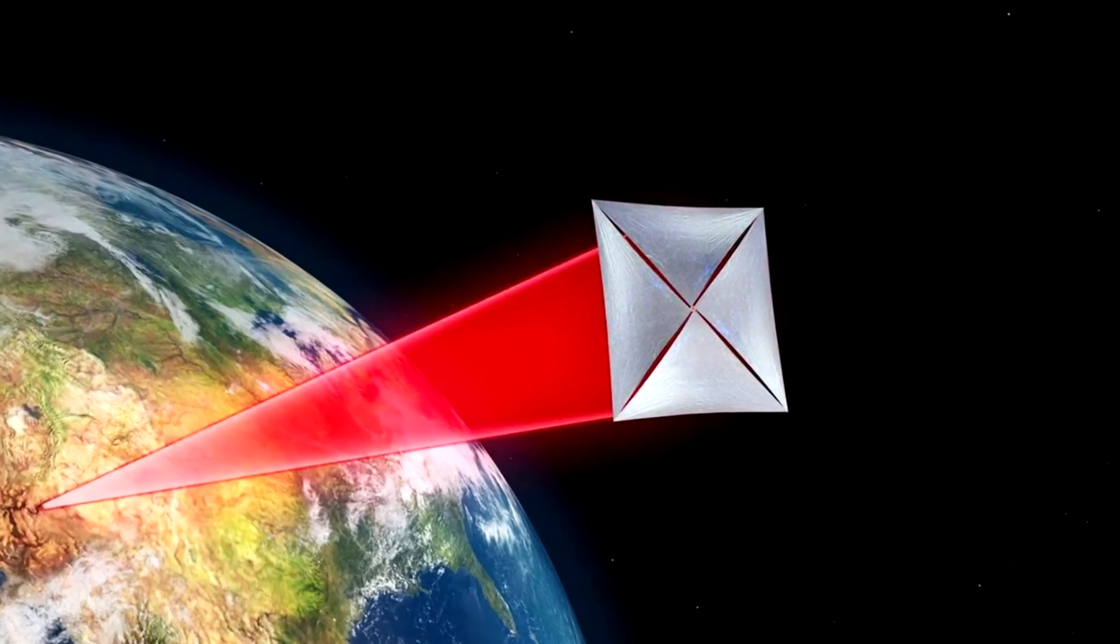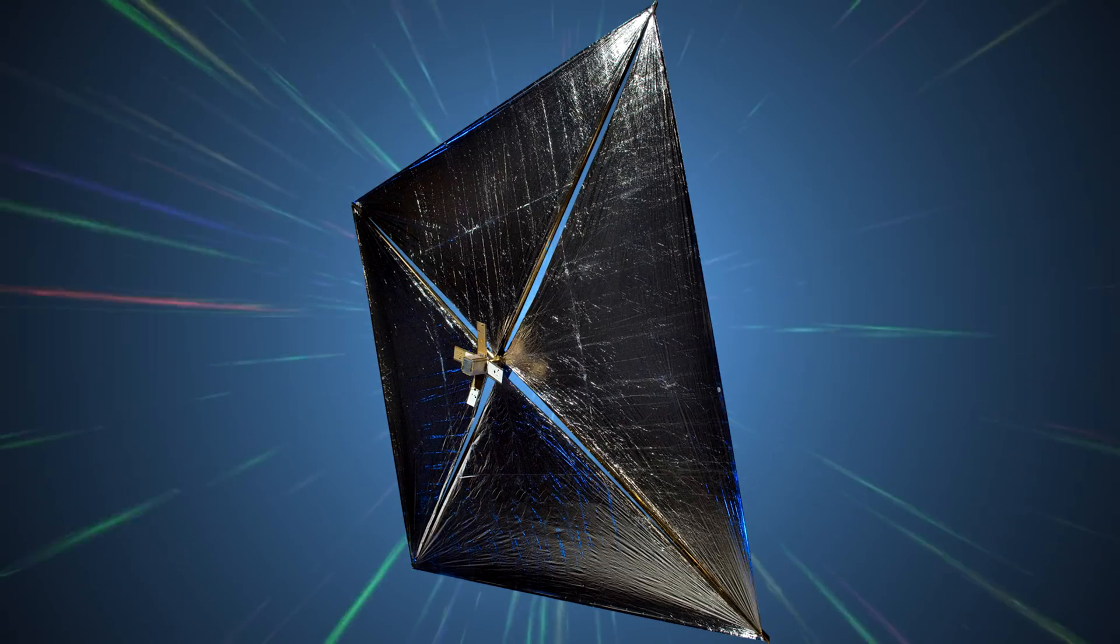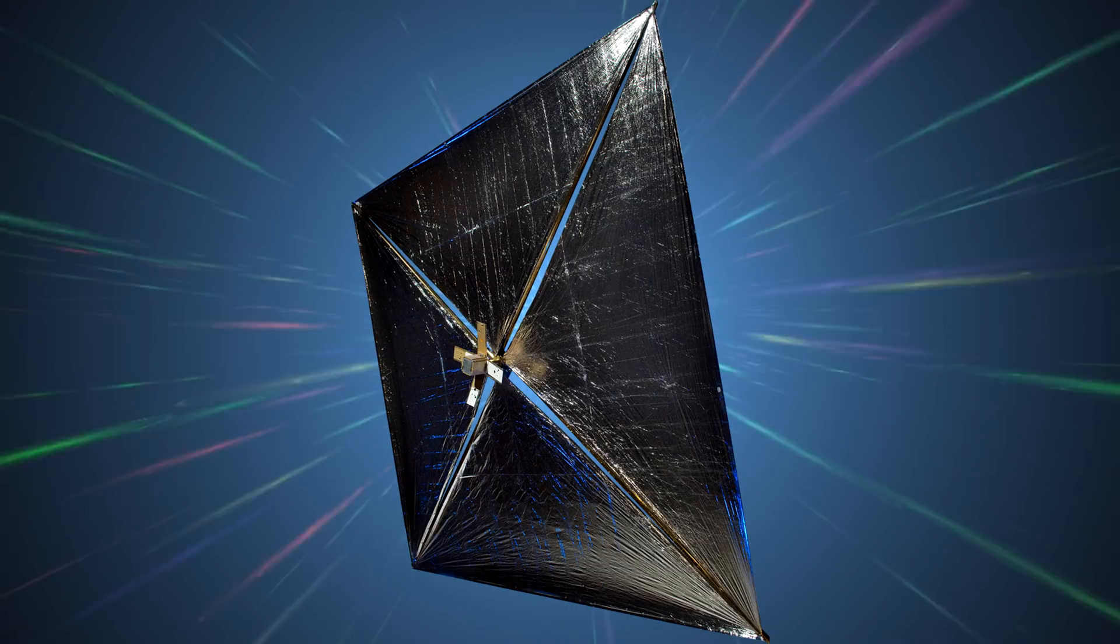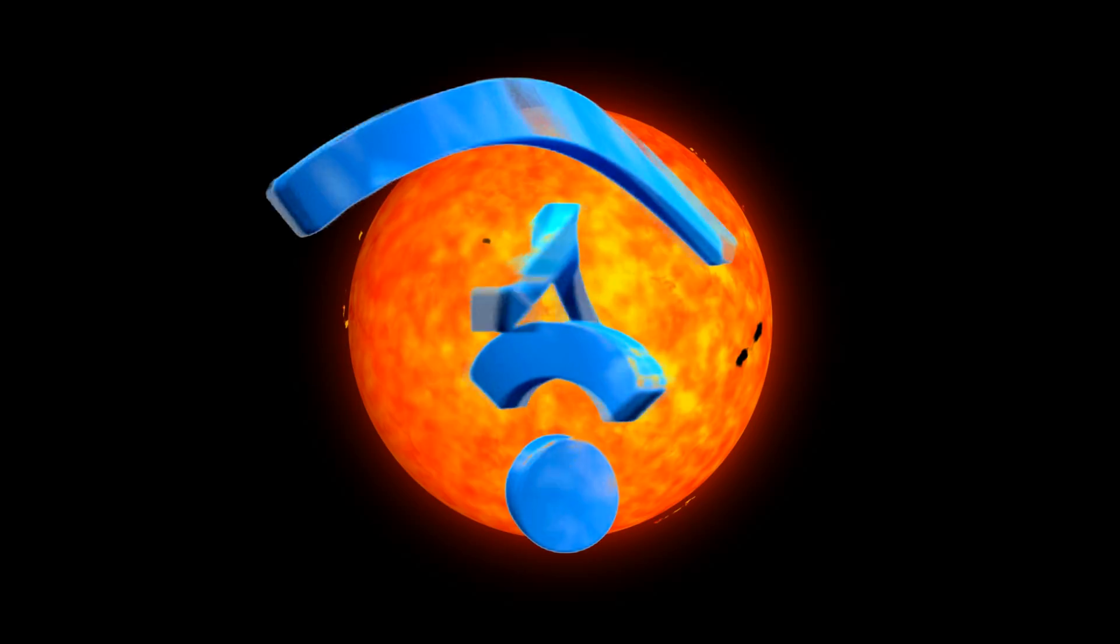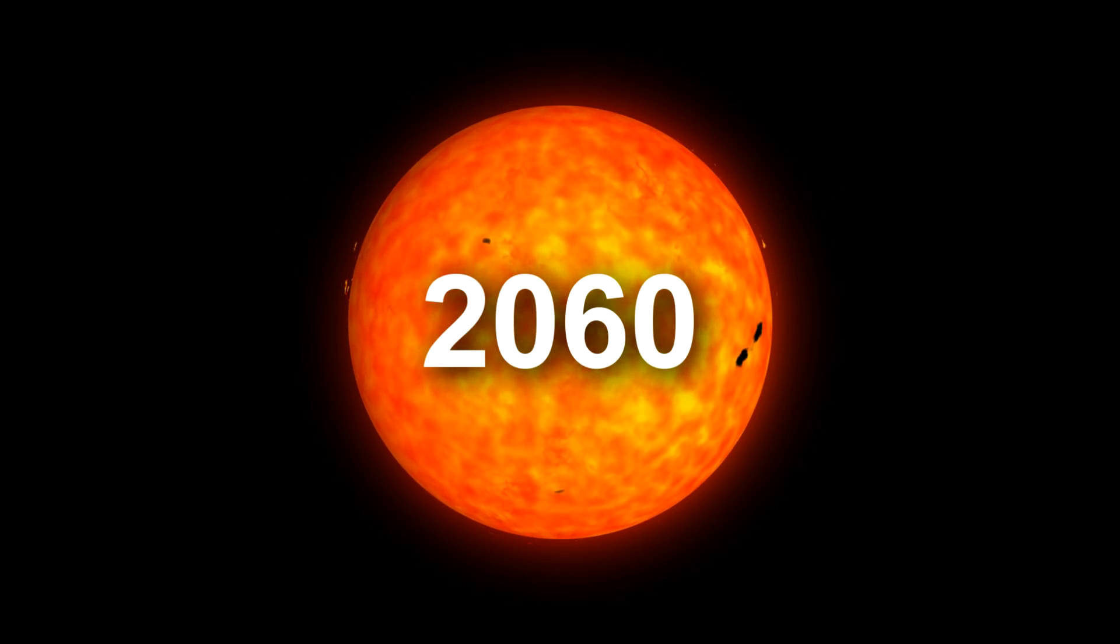So say the mission were to go according to plan. Starshot could launch by 2036. The following journey to the Alpha Centauri system would take roughly 20 years. And to transmit the data back to Earth you must factor in an additional 5 years. Meaning it will be 2060 by the time you get to see the first actual close-ups of another solar system.